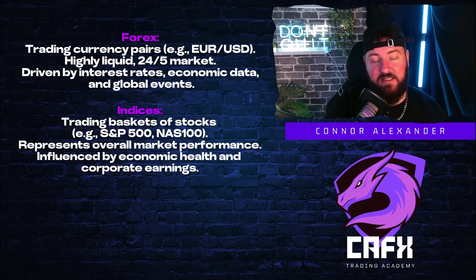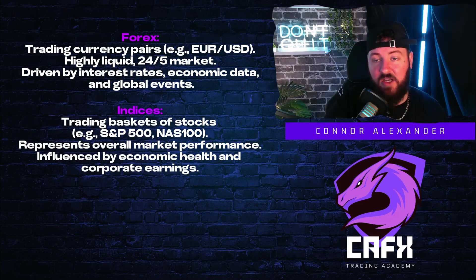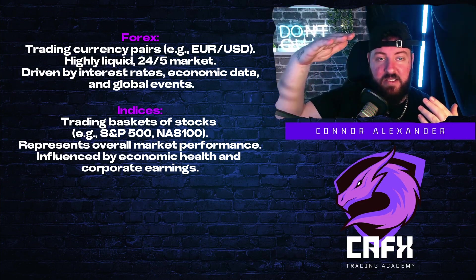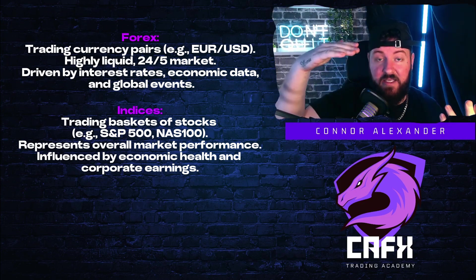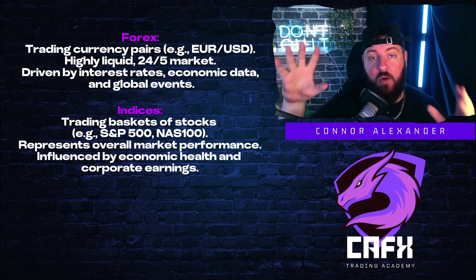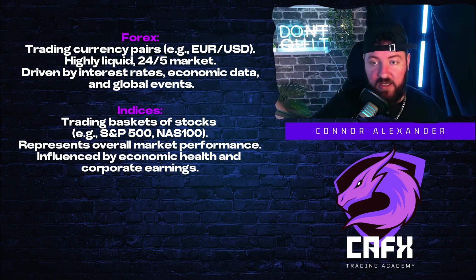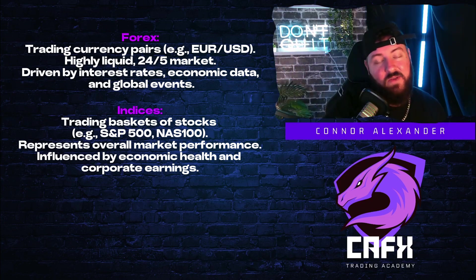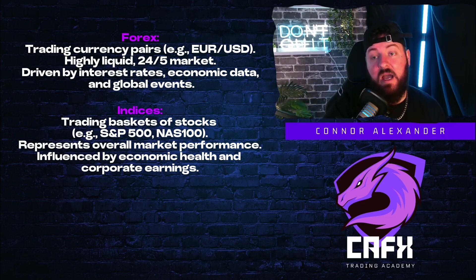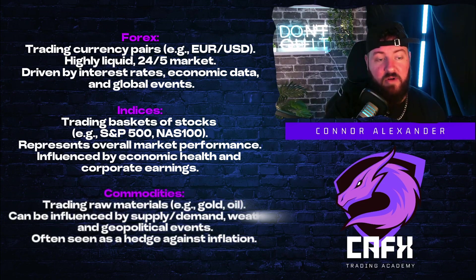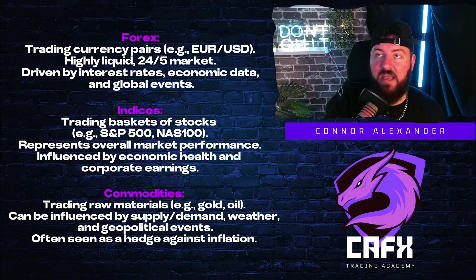Then you've got indices, like the NAS 100 and the US 30. The NAS 100 for example is the top 100 tech stock companies in America all crammed into one place, so we can essentially trade a hundred of them at once. It's very volatile — I trade it.